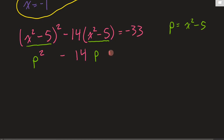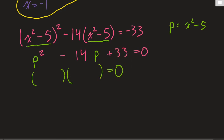With p = x² - 5, we get p² - 14p. Then we bring the -33 from the right to the left to make it + 33, because we need the zero property to solve this. So we've got p² - 14p + 33 = 0. What multiplies to 33? Well, 3 times 11. Sure enough, -3 and -11 give us -14, and a negative times a negative gives us positive 33. So it factors as (p - 3)(p - 11) = 0.